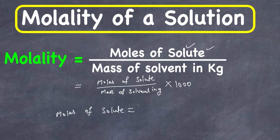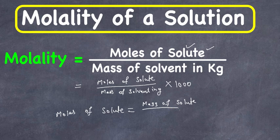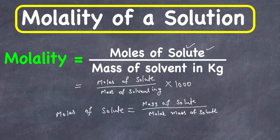Moles of solute is equal to mass of solute divided by molar mass of solute, because sometimes in the problem they give us the mass of the solute instead of moles of the solute. In this way we can convert the mass into the moles of the solute. This is the basic definition of molality of a solution.